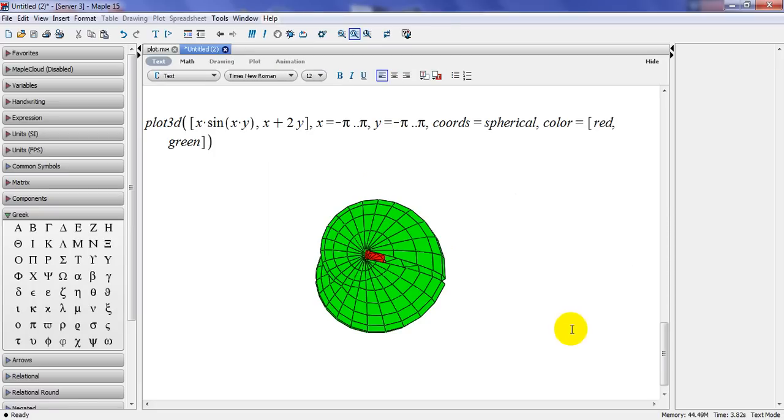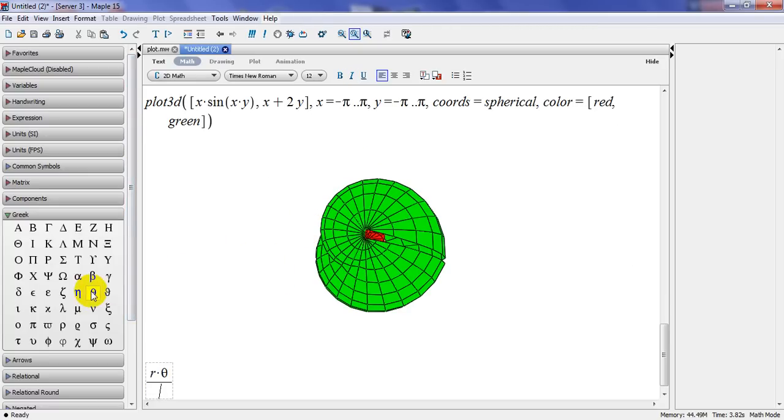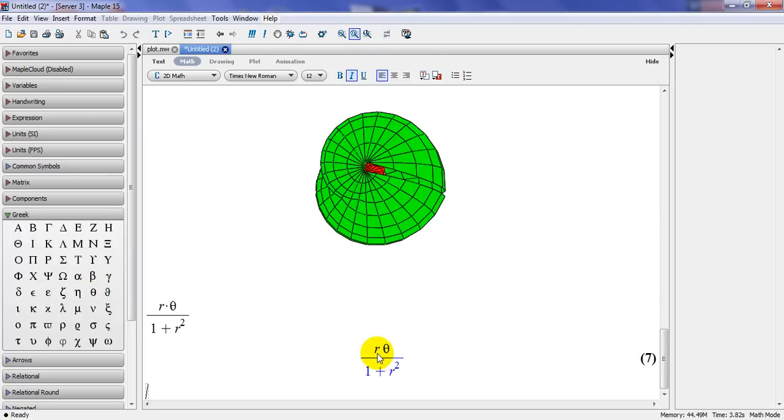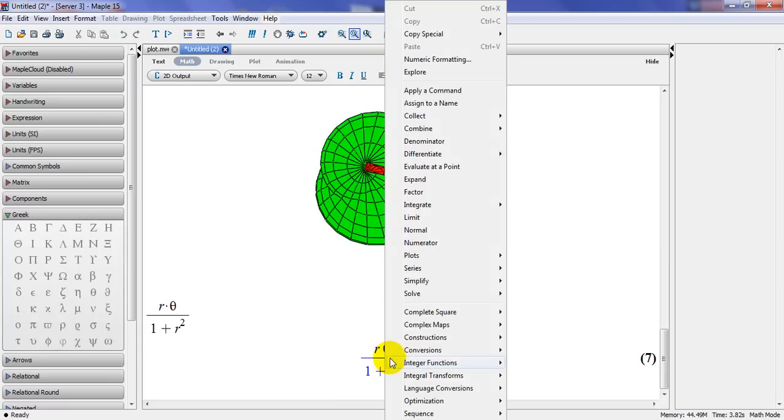Now, let's have another plot. So I want to do polar. Let's see. R multiplied by theta divided by 1 plus R square. So this is a polar. And I want to plot that. So you can right click on it here. And you go to plot. In this case, you go to plot builder.